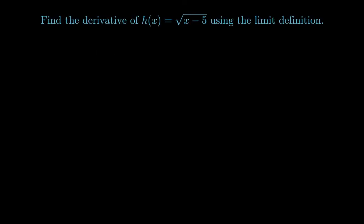In the last part, we take the derivative of the square root of x - 5. We once again utilize the limit as h goes to 0 of the difference quotient.